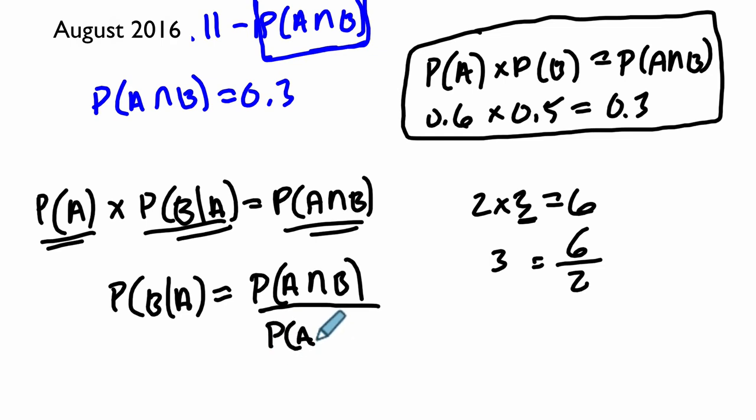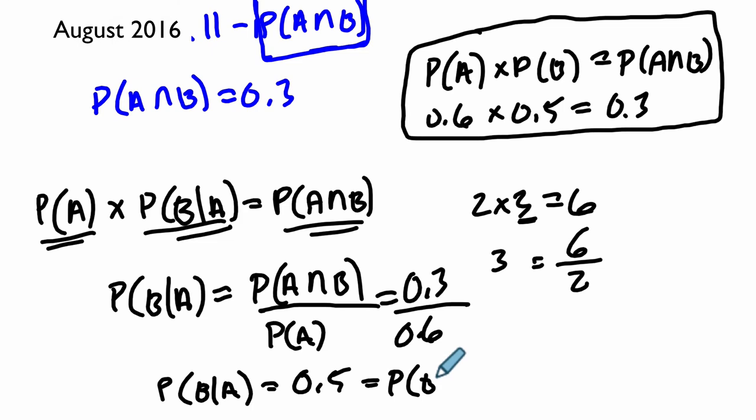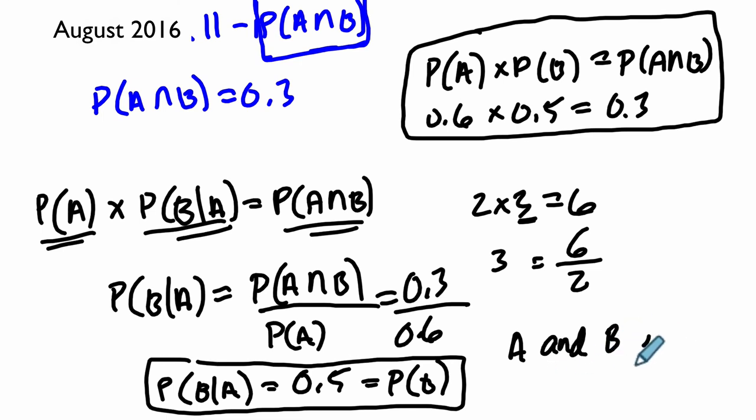Okay, so how do we use that? Well, here we're given the probability of A and B as 0.3. We're also given the probability of A as 0.6. And 0.3 divided by 0.6 must be the probability of B given A, whether it's independent or not. And that's 0.5. But wait a minute, that equals the probability of B, which we had before. So that means the probability of B given A and the probability of B both equal 0.5. So they are equal to each other. And therefore, no matter how we look at this, A and B are independent.